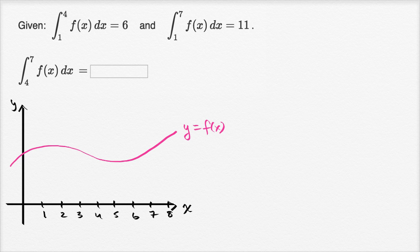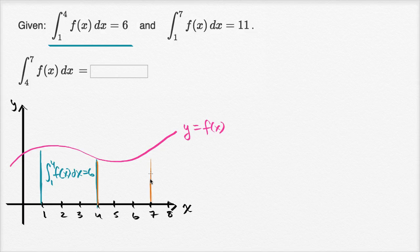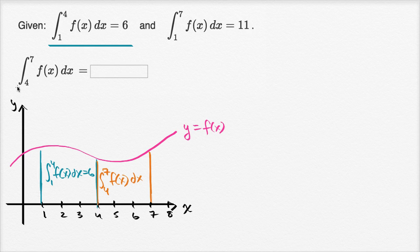Now let's think about what each of these integrals represent. The definite integral from one to four — that's the area under the curve between the curve and the x-axis from one to four, which is equal to six. We also have the region that goes from four to seven, and that area is represented by the definite integral from four to seven of f of x dx — the one we need to figure out. That's the area of the region between x equals four and x equals seven, under y equals f of x, above the x-axis.